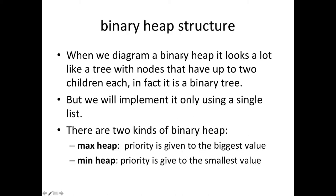Whenever we diagram a binary heap, it's going to look a lot like a tree. It is actually a binary tree — a tree that has up to two children for each node. But we're going to implement it using just one list, not a linked list structure or a list-within-list. It's just one linear list with index numbers starting at zero running up to the last item.